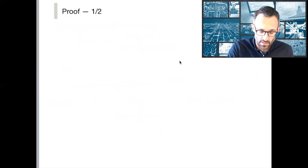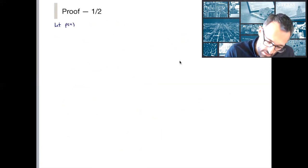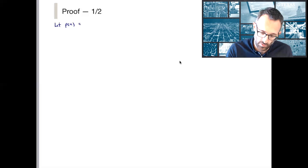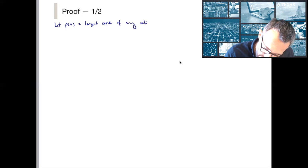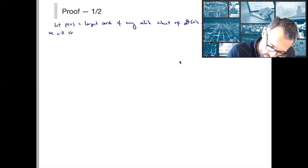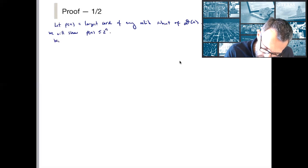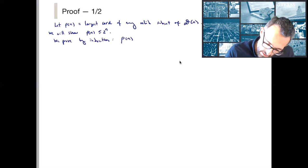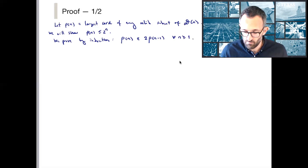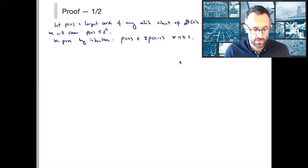So let's get to this proof. It's ultimately going to come down to a proof by induction. Let ρ(n) denote the largest cardinality of any valid subset of D(n). We will show that ρ(n) is bounded by 2 to the n. We prove by induction that ρ(n) is less than or equal to twice ρ(n−1) for any n ≥ 1, and ρ(0) = 1, and therefore this gives us our result.